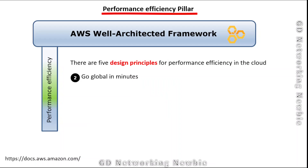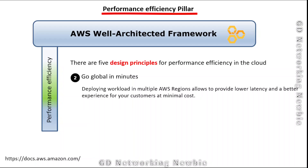The second design principle is go global in minutes. We can deploy our workload in multiple AWS regions so that users in different regions experience lower latency and a better experience at minimum cost. For example, you could use availability zones in India and in Australia.